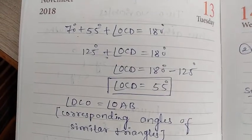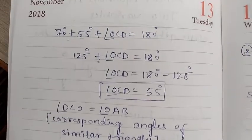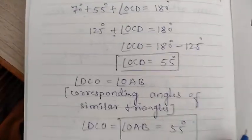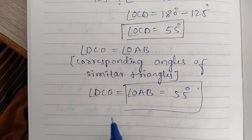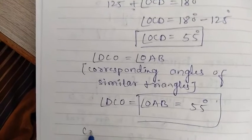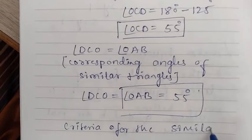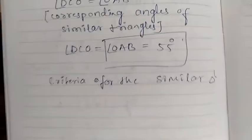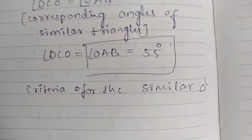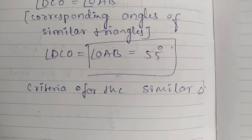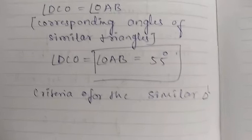Hello everyone, welcome to the NRH channel. In our previous class we saw two examples from exercise 6.3 about similarity of triangles. Today I will explain one more main concept for checking whether two triangles are similar or not. When two triangles have their corresponding angles equal and their corresponding sides in the same ratio, you can say both triangles are similar.